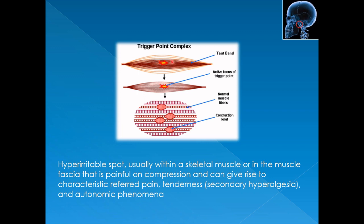This hyper-irritable spot or trigger point consists of localized tender areas, usually two to five millimeter diameter points of increased hypersensitivity in palpable bands of skeletal muscle, tendons or ligaments, which get stimulated by micro or macro traumatic episodes.